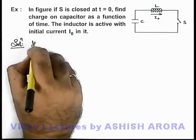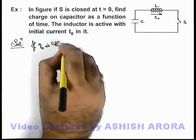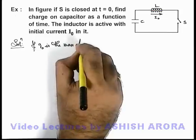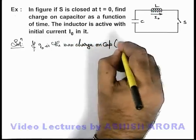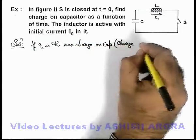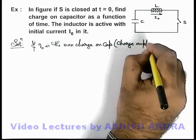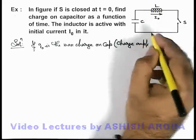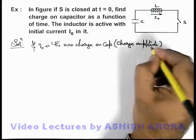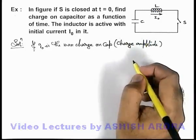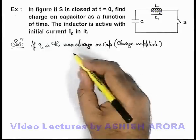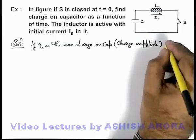Here we can write, if q₀ is the maximum charge on the capacitor, which can also be written as charge amplitude, because we know in case of LC oscillation, charge oscillates about its neutral position on both sides with the maximum charges.